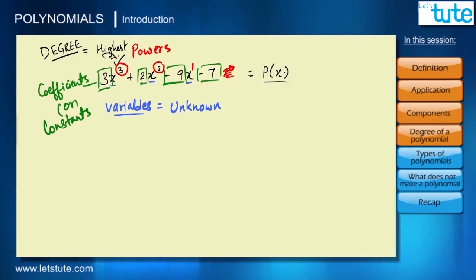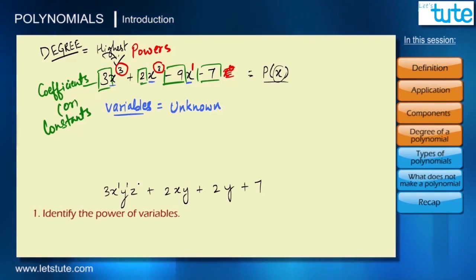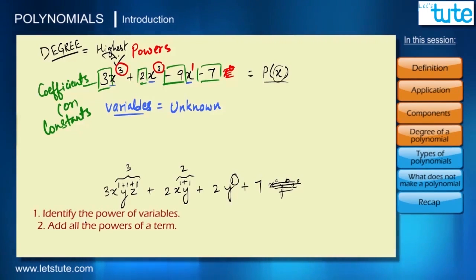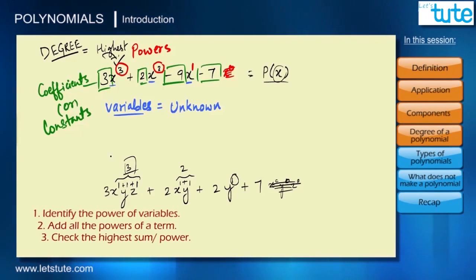This was for polynomial with only one variable x. What about polynomials with more than one variable? Step 1 would be to identify the powers of these variables for every term. We can see there is one power for every term. Then we have x⁰, y⁰, or z⁰, which if we don't write doesn't matter. The next step is to add these powers. Over here we have 1 already and then 0. We check where the sum is highest, and we can see we have the highest sum here. This will be called the degree of this polynomial with multiple variables.